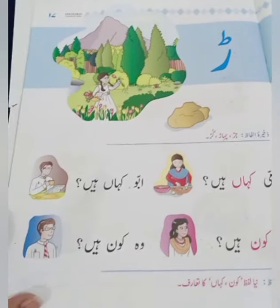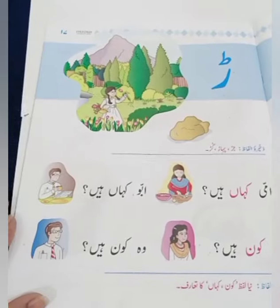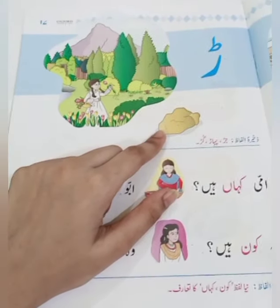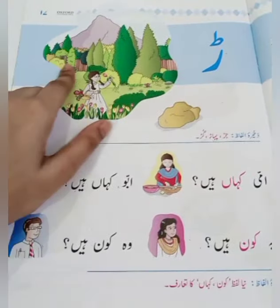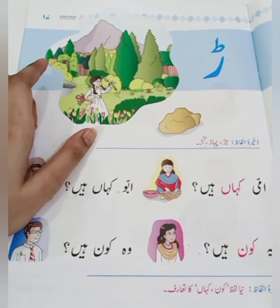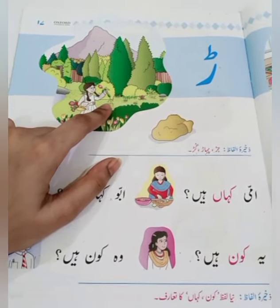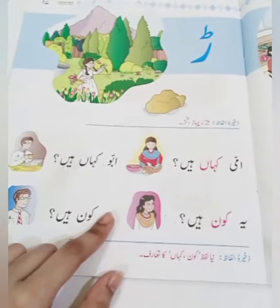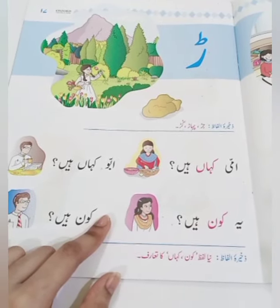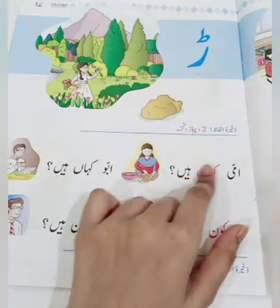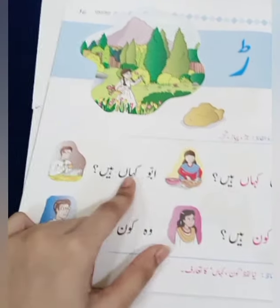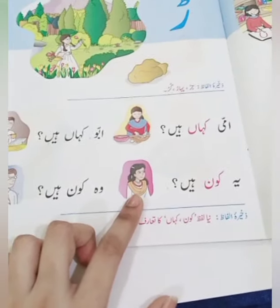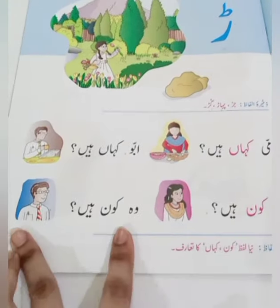اب نکالیے صفحہ نمبر سترہ: ڈے، ڈے کے اوپر چھوٹی تویں۔ پیارے بچوں جیسا کہ میں نے آپ لوگوں کو پہلے بھی بتا چکی ہوں کہ ڈے سے کوئی لفظ شروع نہیں ہوتا، لیکن جن الفاظ میں رے آتا ہے وہ ہیں: رے سے پہاڑ، رے سے جڑ، رے سے گڑ۔ نیا لفظ: کون کہاں؟ امی کہاں ہے؟ امی کچن میں ہے۔ ابو کہاں ہے؟ ابو دفتر میں ہے۔ (Page 17 - De: no words start with De, but Re appears in: mountain, root, jaggery. New words: where is Ami? In kitchen. Where is Abbu? In office.)